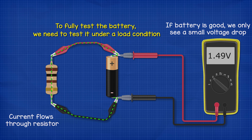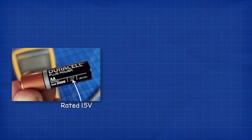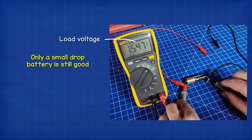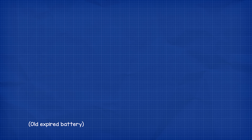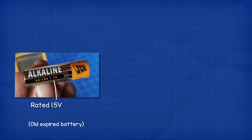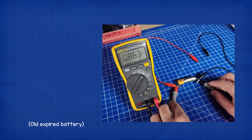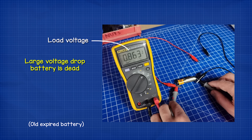If the battery is still good, the voltage level will only drop slightly. For example, this battery is rated at 1.5 volts; with no load it reads 1.593 volts, and with the resistor connected it reads 1.547 volts — so this battery is still good. However, another battery also rated at 1.5 volts reads exactly 1.5 volts with no load, but when the resistor is connected, the voltage drops to 0.863 volts — confirming that this battery has run out of charge.